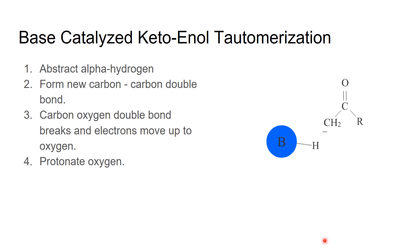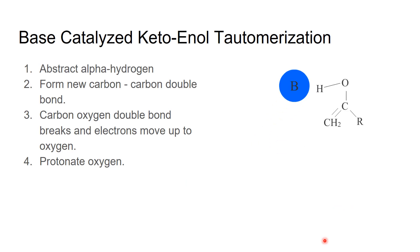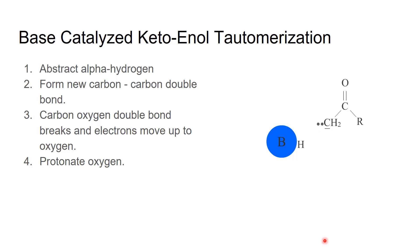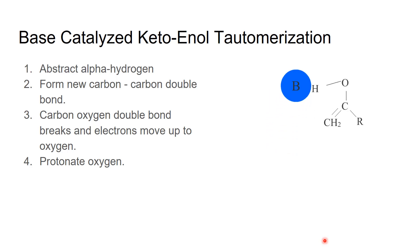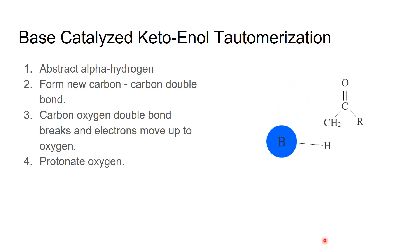The negatively charged oxygen then abstracts a hydrogen from water — which is fairly acidic — forming hydroxide, and now we have our enol tautomer. The animation shows: first we abstract the hydrogen, form the new C=C double bond, and then oxygen grabs a hydrogen from the conjugate acid of the base.